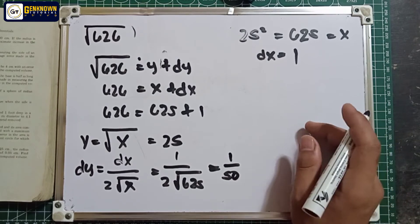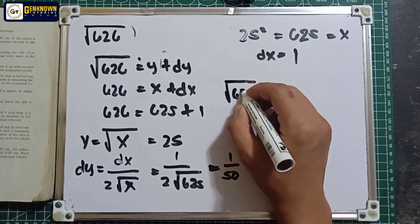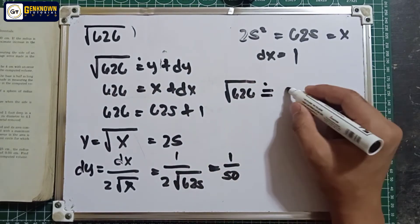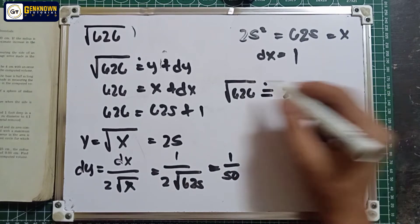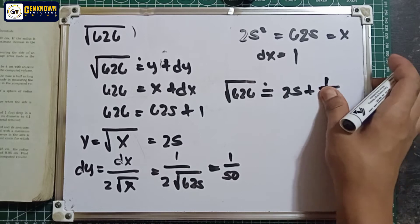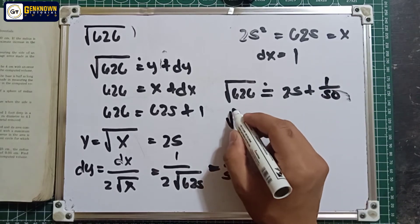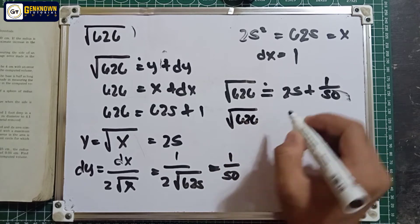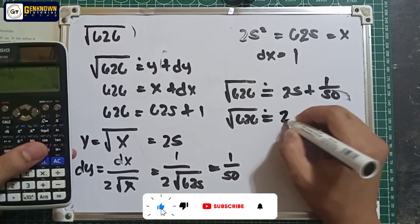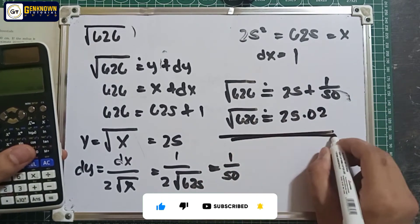So the total: square root of 626 is approximately equal to y plus dy, which is 25 plus 1/50, giving us 25.02. This is the answer for number 1.